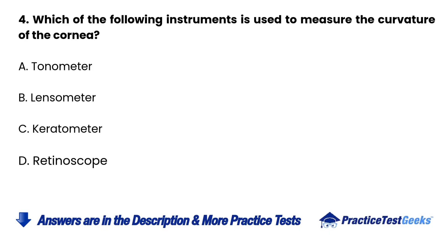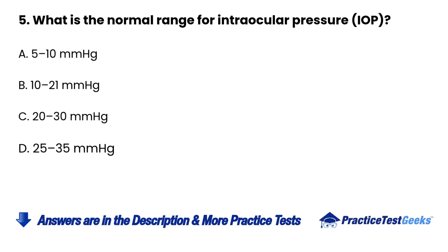4. Which of the following instruments is used to measure the curvature of the cornea? A. Tonometer B. Lensometer C. Keratometer D. Retinoscope